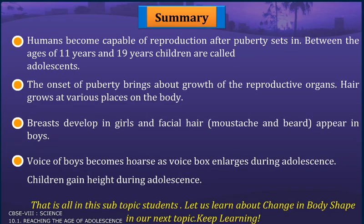Summary: Humans become capable of reproduction after puberty sets in. Between the ages of 11 and 19 years, children are called teenagers. The onset of puberty brings about growth of the reproductive organs, hair grows at various places on the body, breasts develop in girls, and facial hair — mustache and beard — appear in boys. The voice of boys becomes hoarse as the voice box enlarges during adolescence. Children gain height during adolescence. In our next topic, we will learn about change in body shape. Keep learning.